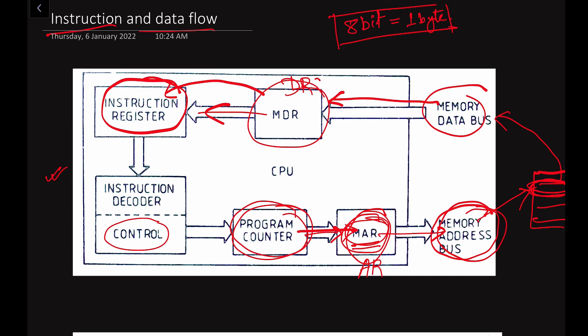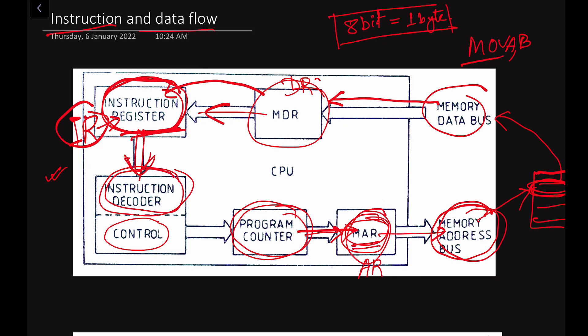The opcode is then placed into the instruction register. You can see this connection — the instruction register takes the opcode from the memory data register. After getting placed into the instruction register, the opcode is decoded by the instruction decoder. For example, for the MOV A, B instruction, the opcode is 78H in hex. That opcode will be decoded by the instruction decoder, which will determine that it is a move operation.